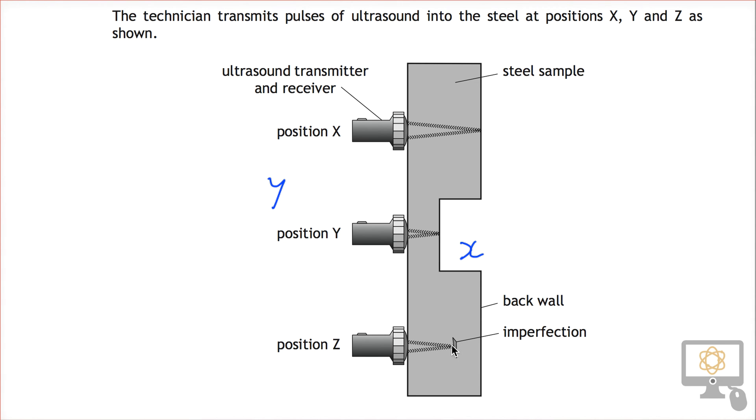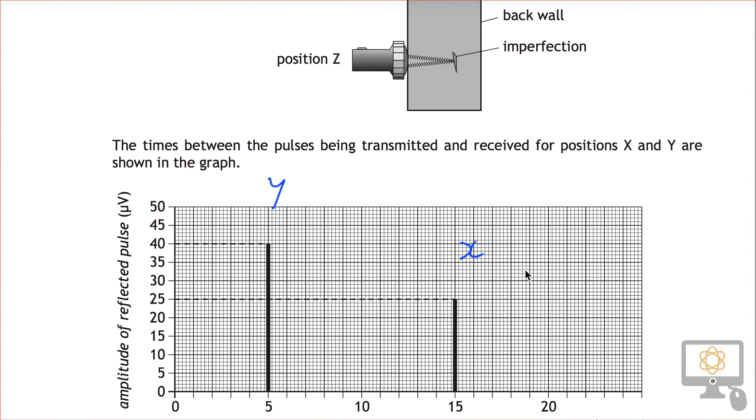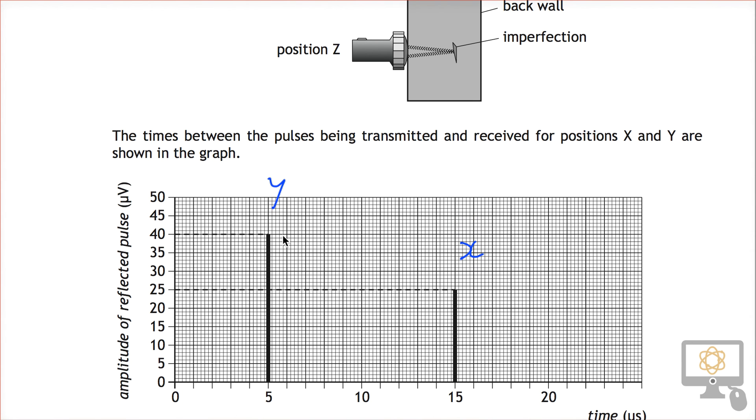Also, because it's in between those two distances, the amount of ultrasound that will have been absorbed is somewhere in between what was absorbed for position y and what was absorbed for position x. And so therefore the intensity of the reflected pulse is going to be somewhere in between 40 and 25.